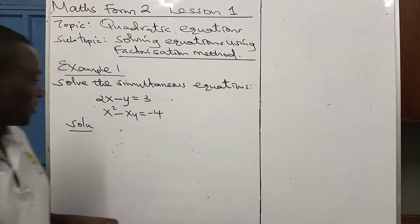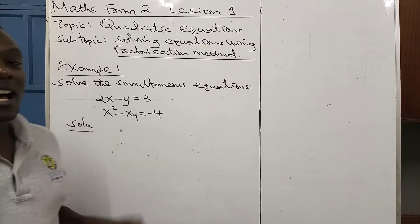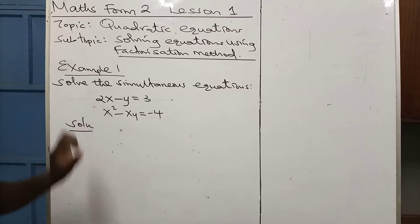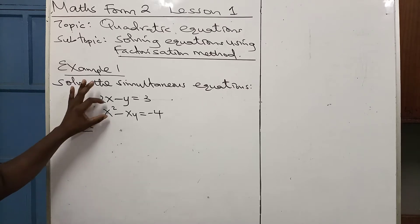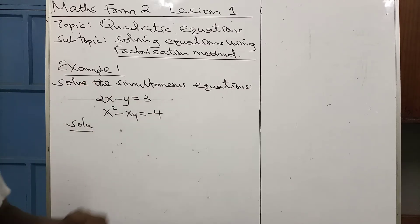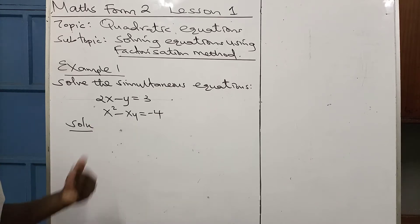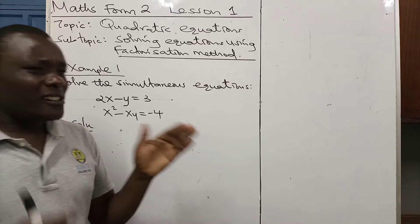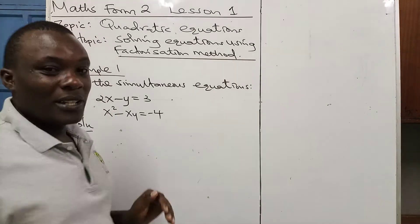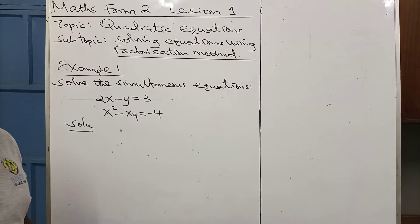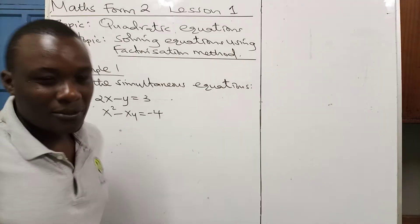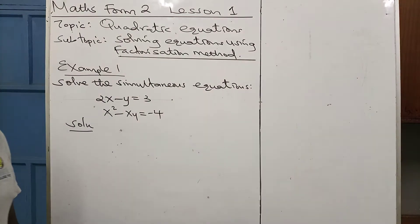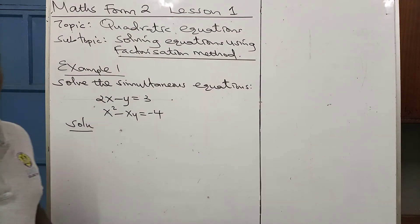Let's look at equation number two. We have X and Y as unknown letters, but look at the first X — it has power two. This is the highest power in this equation, because the other X and Y have power one each. Any equation where there is an unknown letter with power two means you are dealing with a quadratic equation. And if there were power three, you would be dealing with cubic functions.